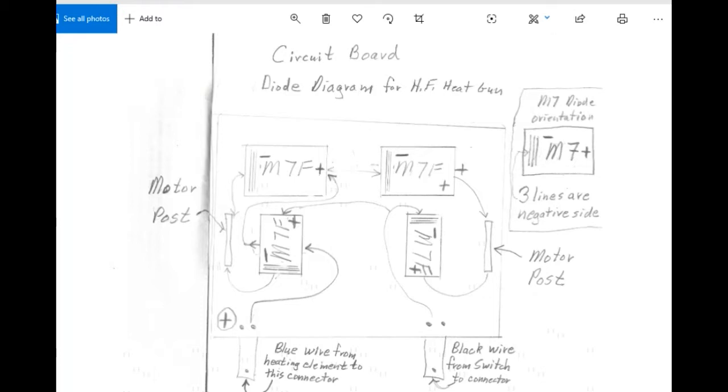So one of the things I did before I took the little green circuit board off of the motor was I cleaned it up real good with alcohol so I could read the lettering on the diodes, and I made this diagram. You can see on the left and the right I've got the motor posts, that's the posts that comes up into the green circuit board from the motor. Down the far left hand side I've got a positive sign and I say blue wire from heating element to this connector, and then the other connector I have black wire from switch to connector. Then up in the right hand corner I have M7 diode orientation.